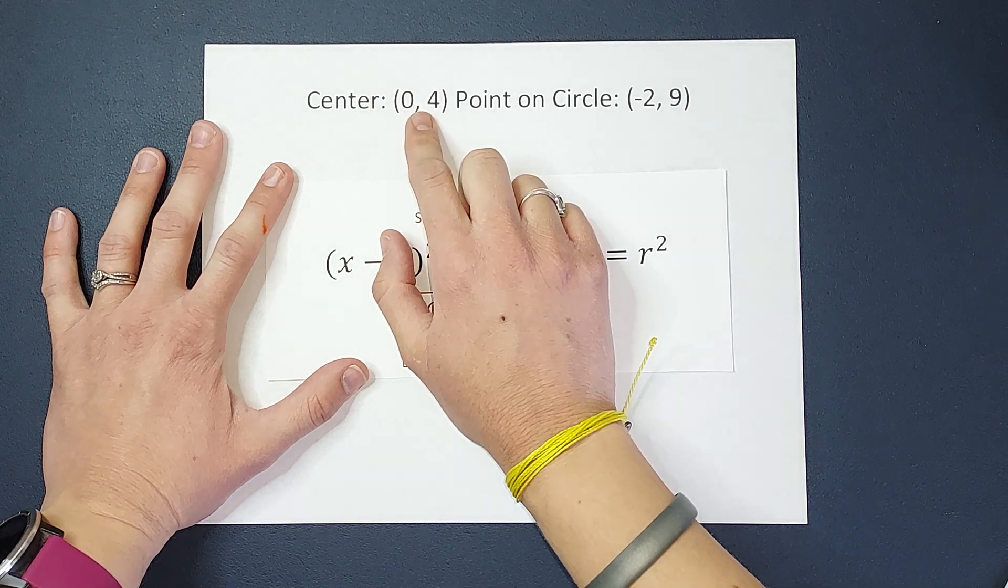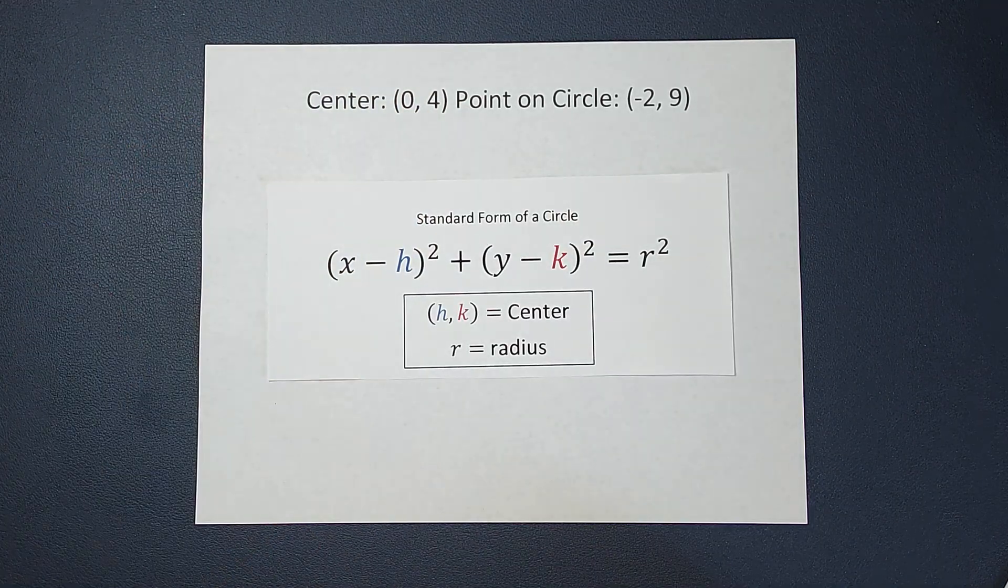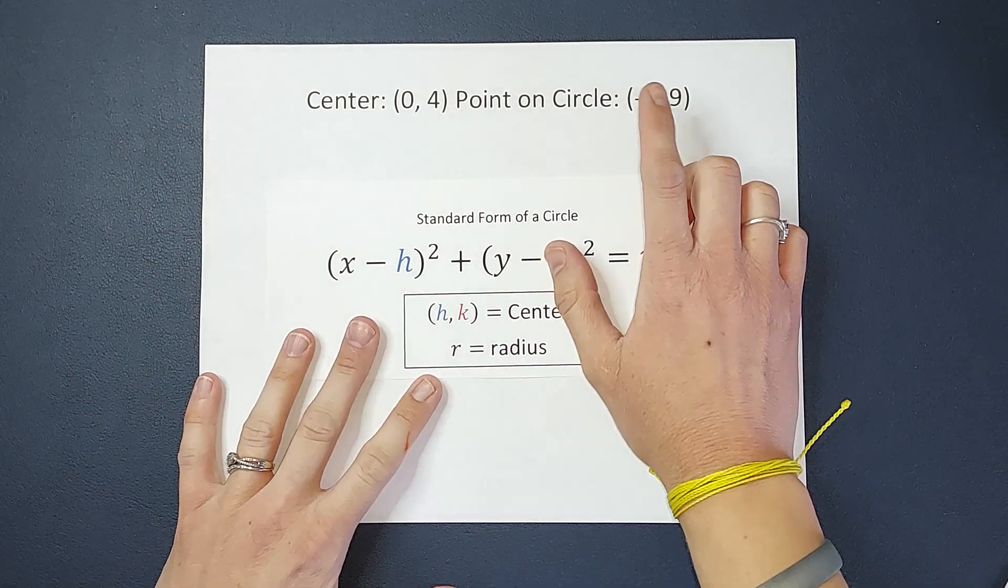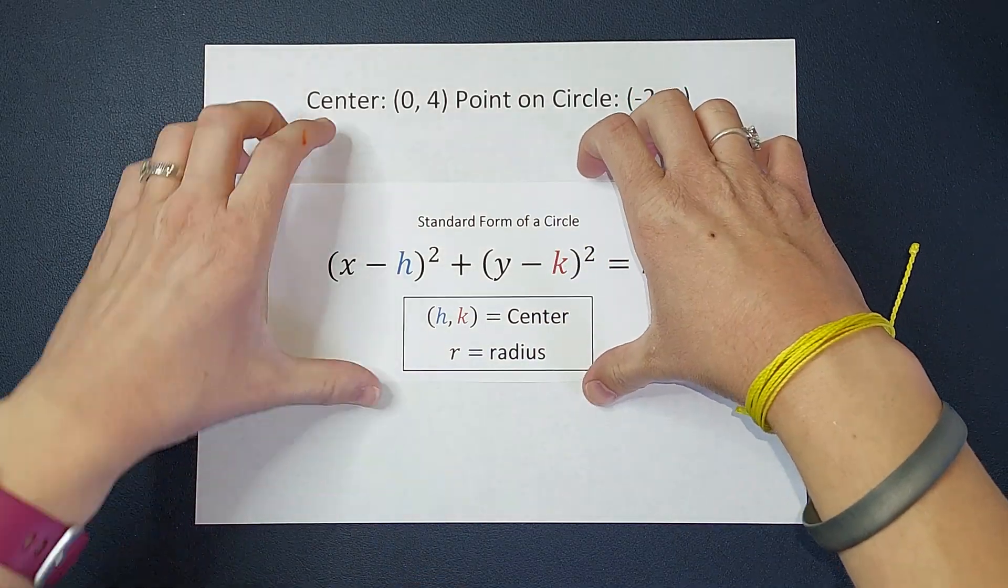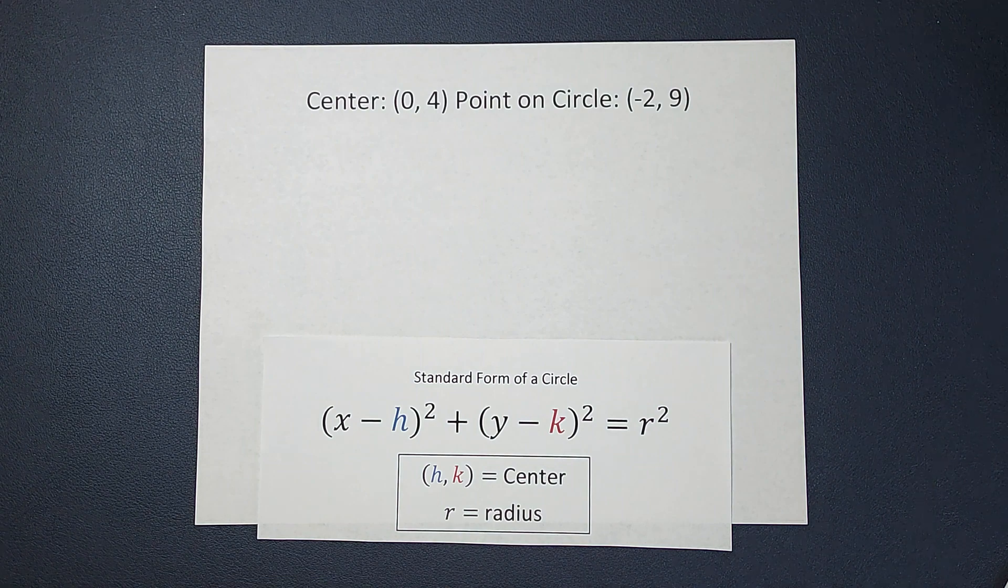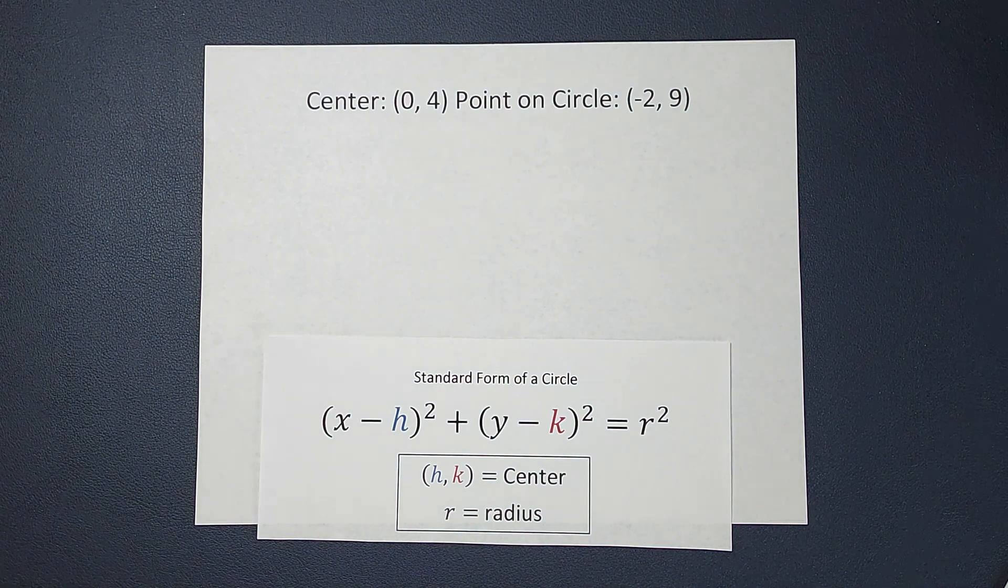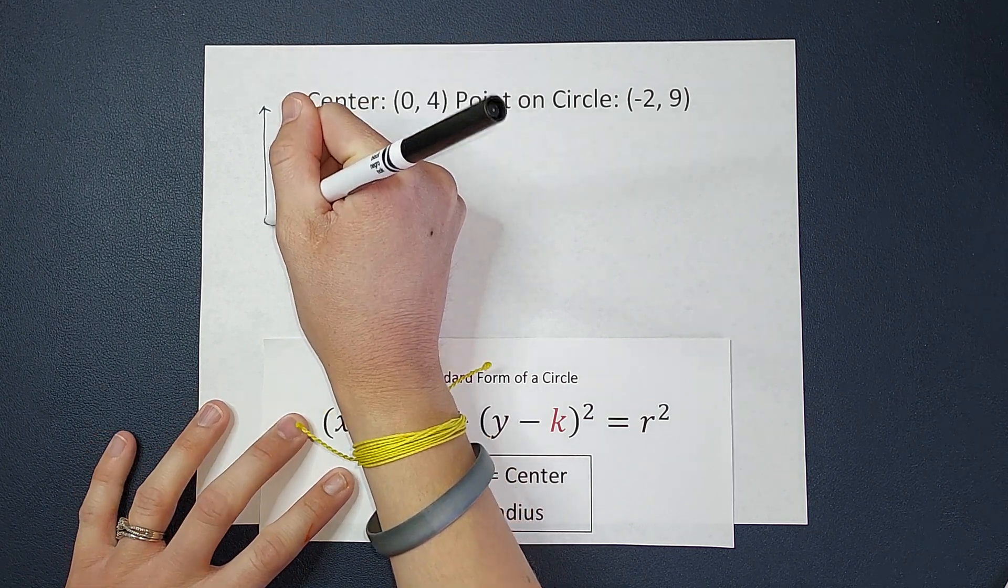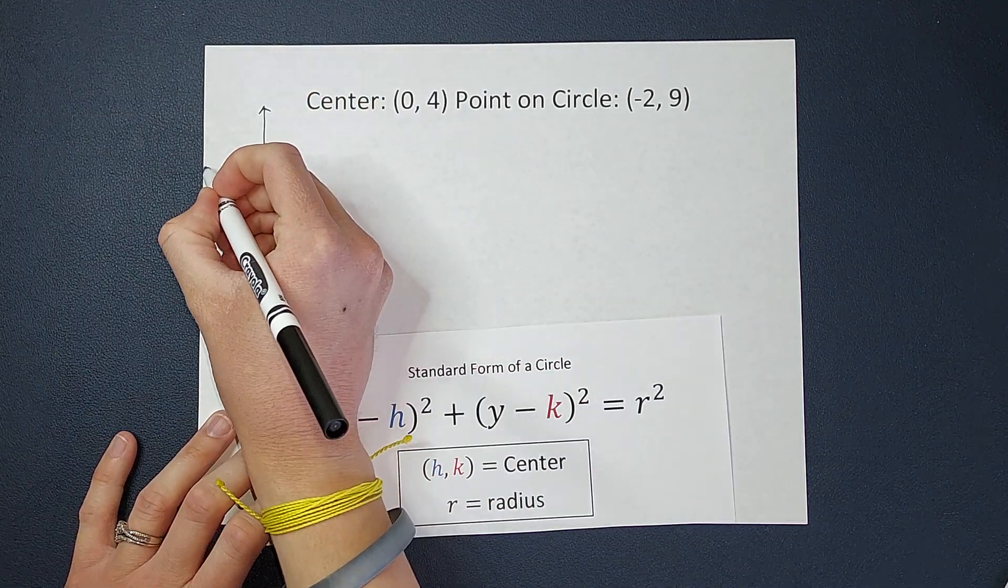Looking at this, I have the center, but I don't have the radius, but they have given me a way to find the radius, which is a point on the circle. So usually what I like to do with a problem like this is just kind of quickly sketch what it looks like. This isn't going to be perfect or beautiful, but it just kind of gives me an idea.